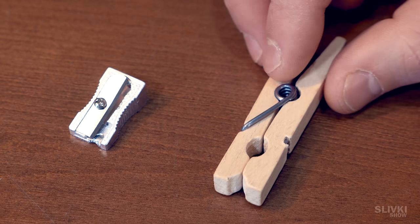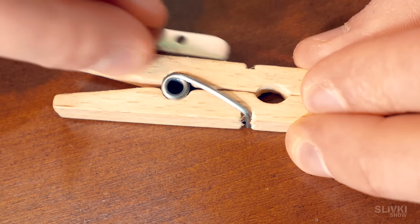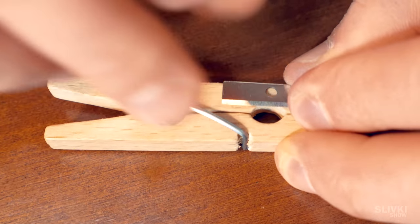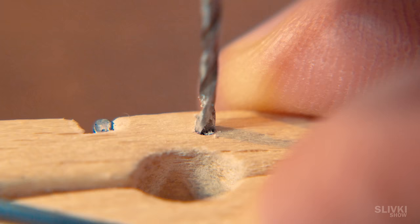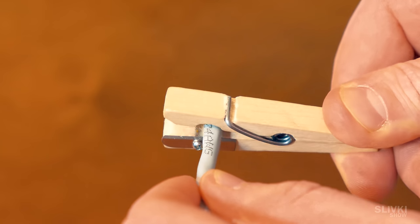If you have a sharpener and a cloth pin, you are very lucky. Separate the blade from the keys, attach it to the cloth pin as shown in the video and make a mark for a hole. Drill a hole using a drill, screw the blade there and get the best tool for removing wire insulation.